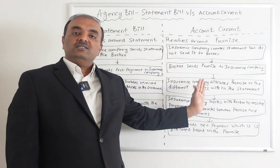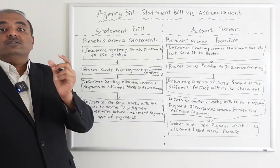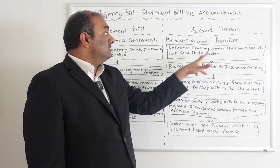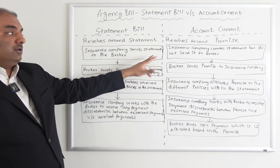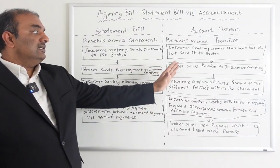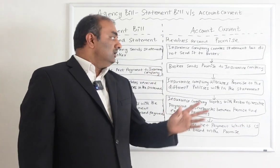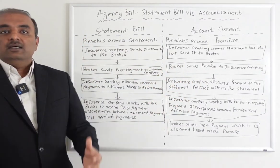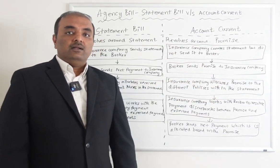When it comes to account current, most of the steps are similar, except that payment discrepancies are handled before the payments are submitted. The insurance company creates a statement but does not send it to the broker — that's the key difference. Whereas in statement bill, the insurance company sends the actual statement to the broker. In account current, the broker sends a kind of promise saying, 'I have $25,000 in payments that I'm going to send you in a month or so.' Based on that promise, the charges documented in the promise statement are applied to the policies within that agent's account.